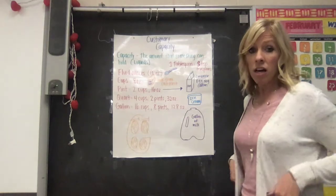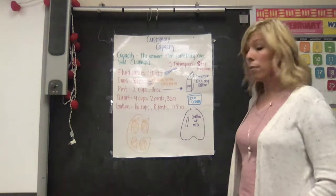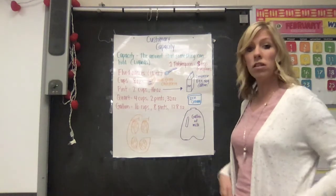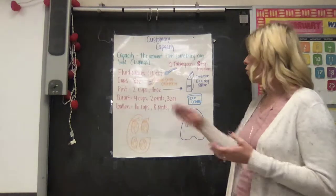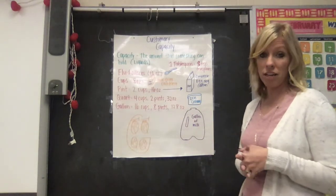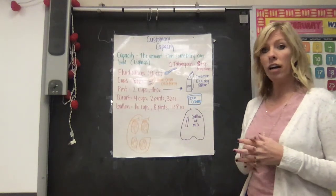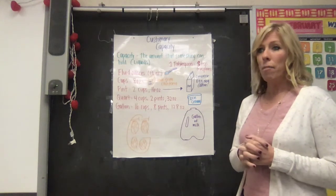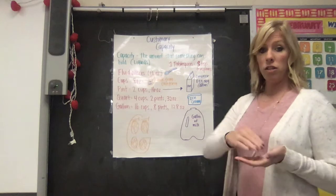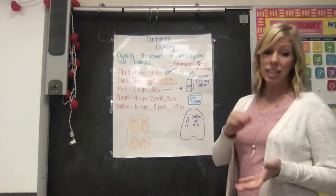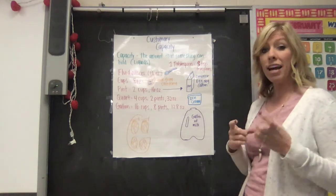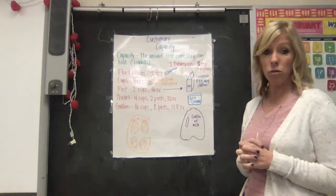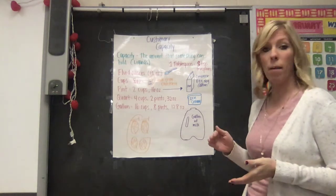Next is cups. Cups have eight ounces in them. That is a cup of drink, or the milk you get from the cafeteria is a cup. A cup really isn't a whole lot of drink if you think about it. I think it's because we're so used to these 20 ounce drinks or 16 ounce drinks. So eight ounces seems like a very small amount because we're so used to drinking bigger amounts.